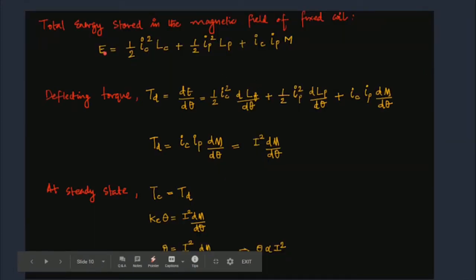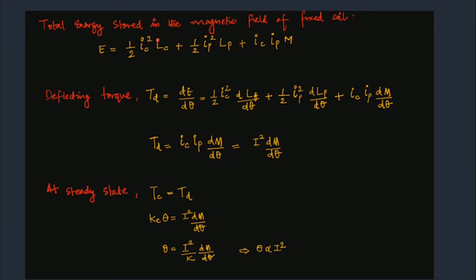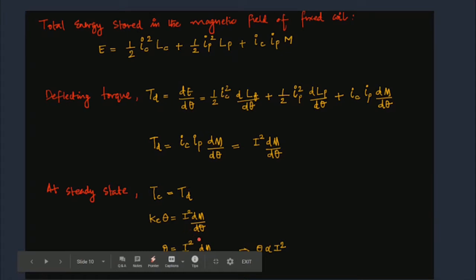The total energy stored in the magnetic field is E = ½IC²LC + ½IP²LP + IC·IP·M, where LC is the inductance of the current coil, LP is the inductance of the pressure coil, and M is the mutual inductance. The deflecting torque TD = dE/dθ = ½IC²·dLC/dθ + ½IP²·dLP/dθ + IC·IP·dM/dθ. Simplifying, TD is proportional to IC·IP·dM/dθ. At steady condition, θ is proportional to I²·(dM/dθ)/KC.